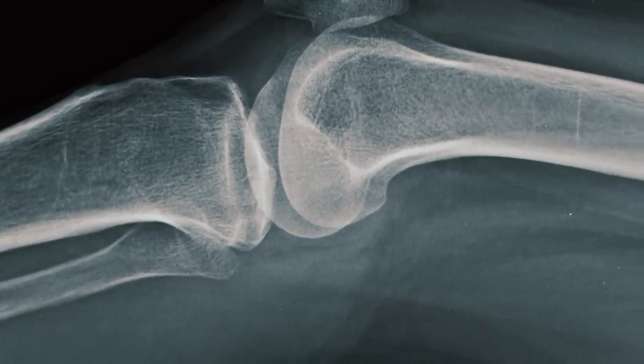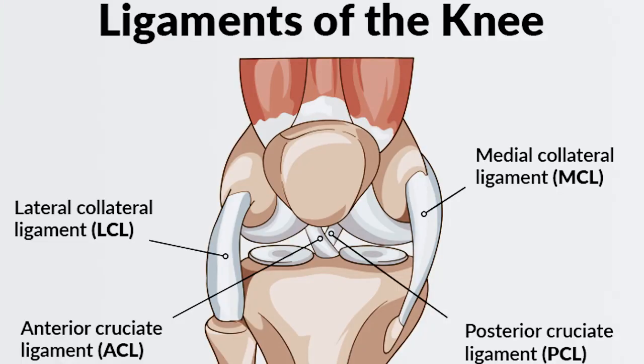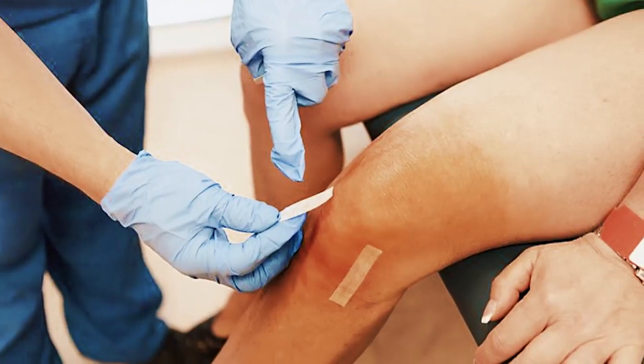A knee dislocation is a traumatic injury to the knee. The knee is made up of our thigh bone, the femur, and the shin bone, which is the tibia, and those bones are connected by ligaments. We generally have four ligaments in our knee: the collateral ligaments on the sides, and then in the middle there's the ACL and the PCL — the anterior cruciate ligament and the posterior cruciate ligament. Those four ligaments function to hold the bones together.